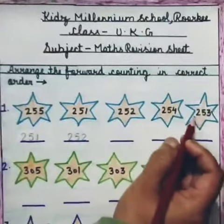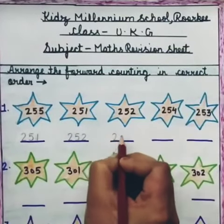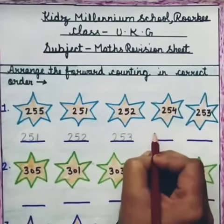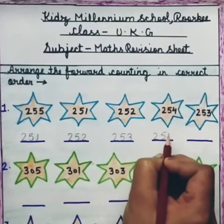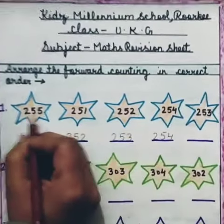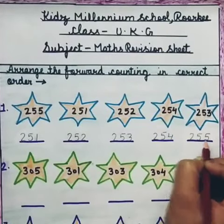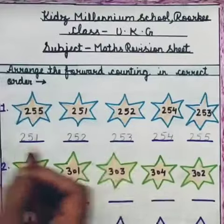After that 253, after that 254 and then 255. So, we will arrange them like this.